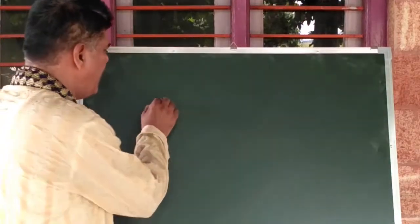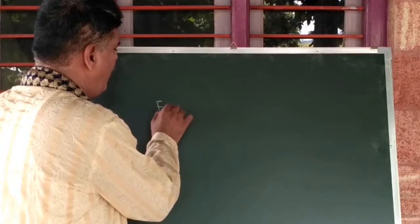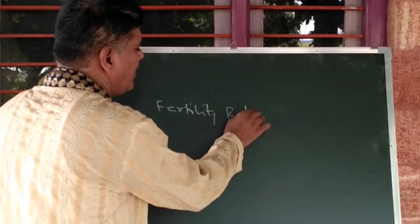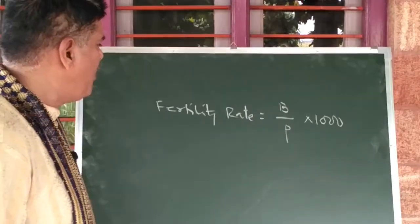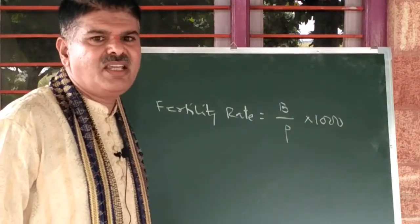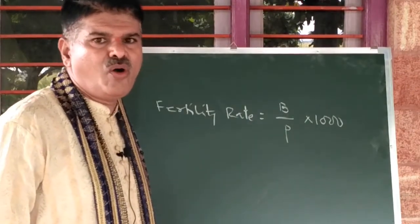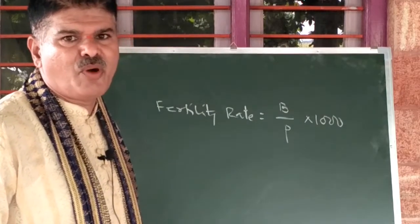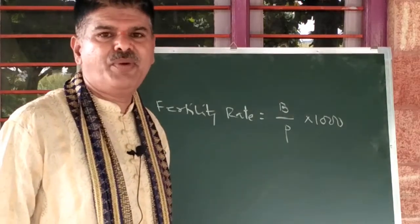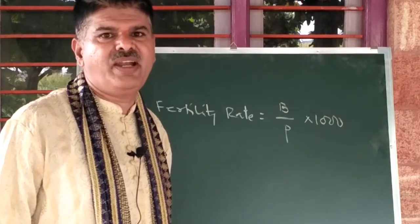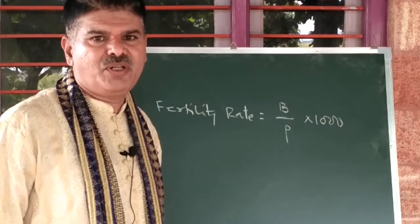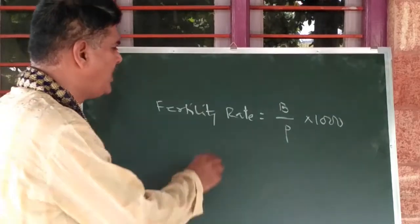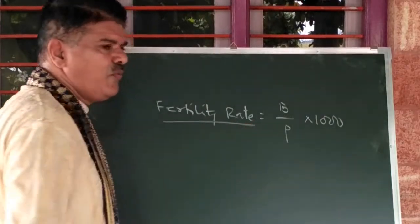So what is actually meant by fertility rate? Fertility rate is the ratio of live births to the total population of a specified region in a particular year. That is called the fertility rate.